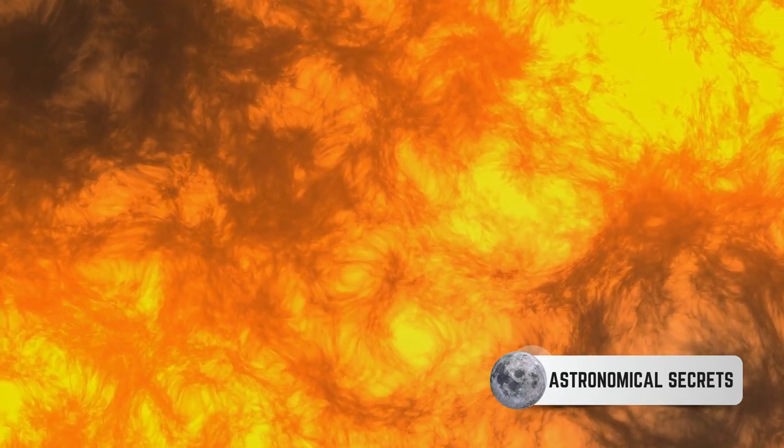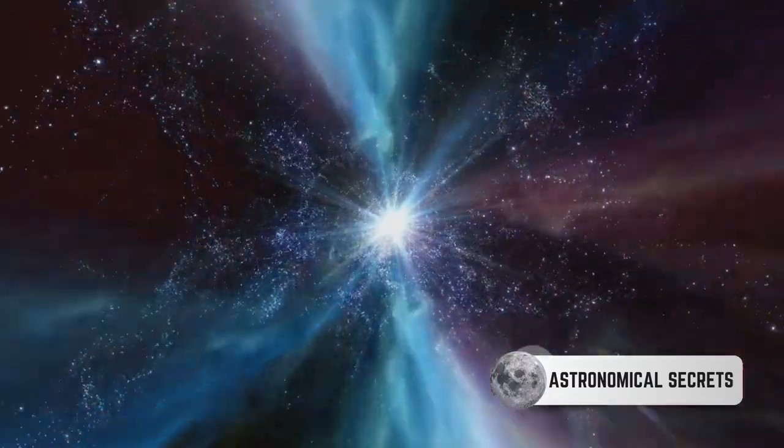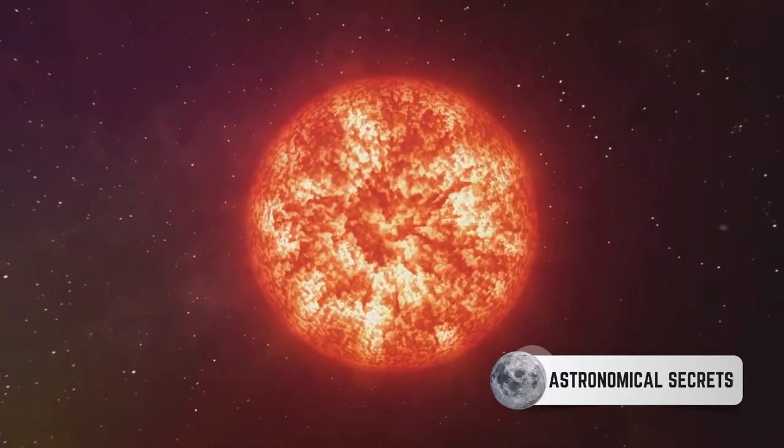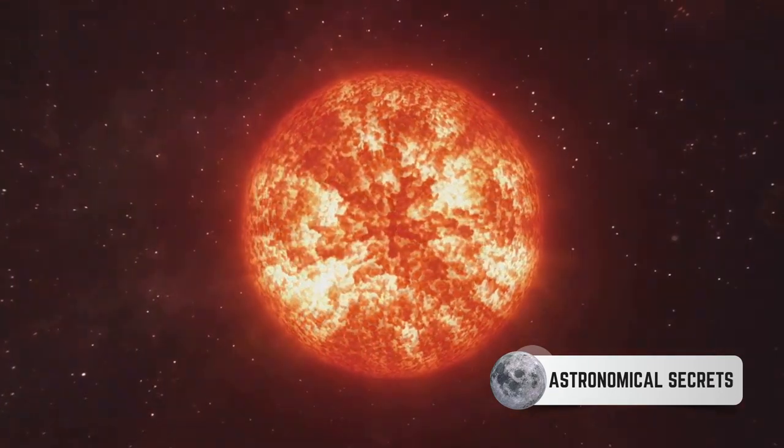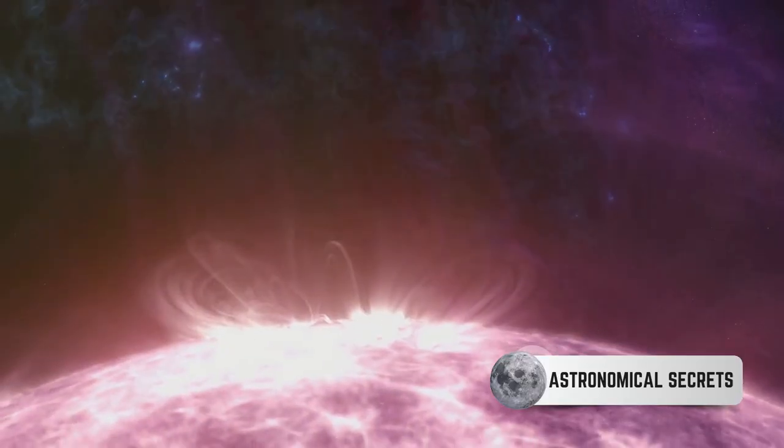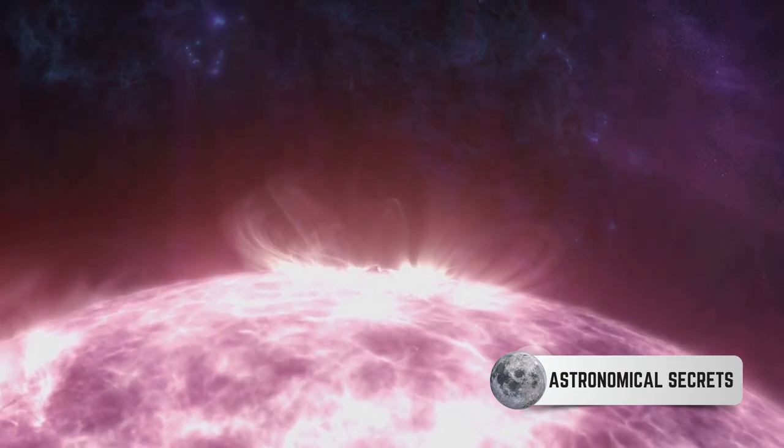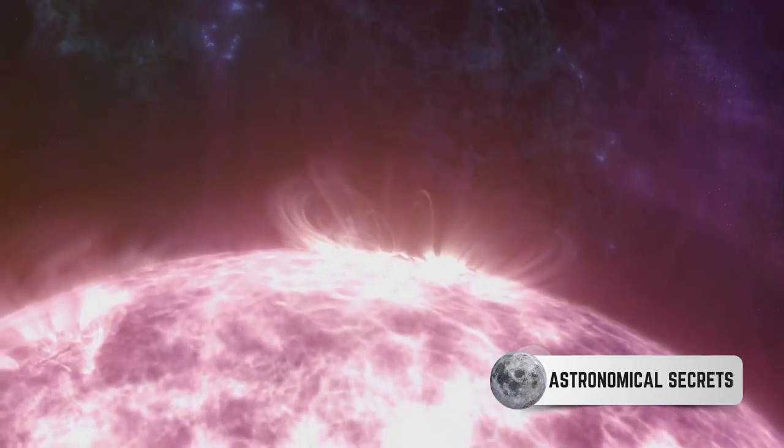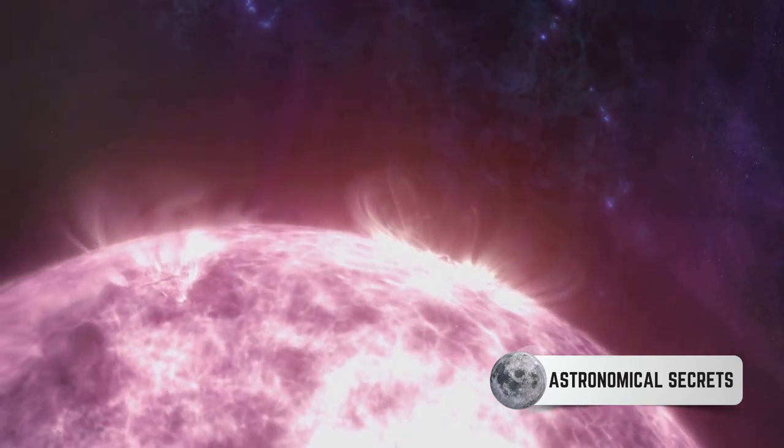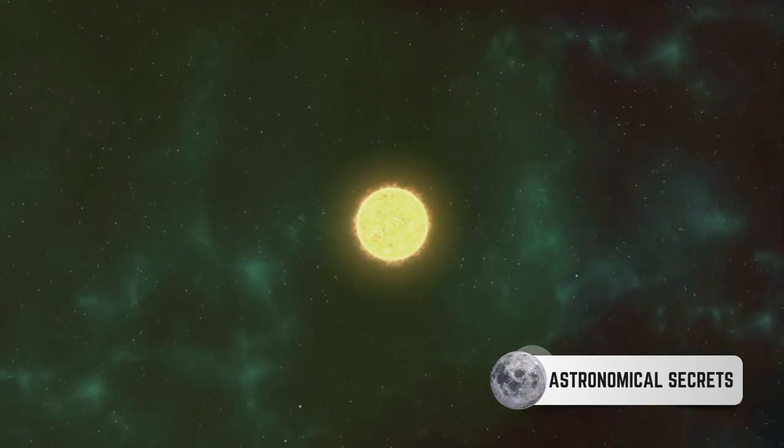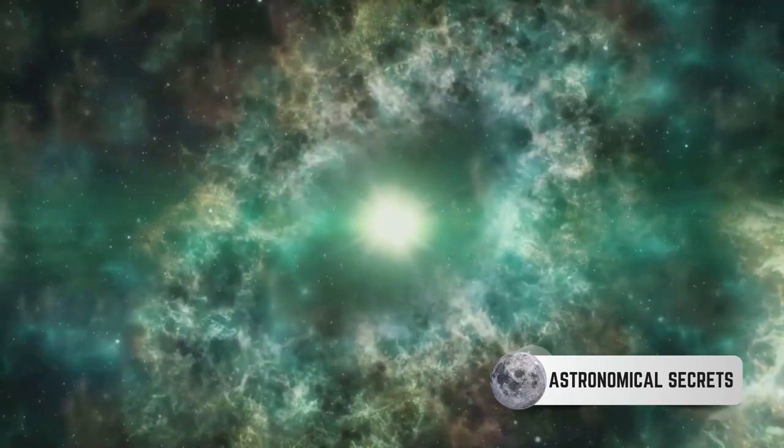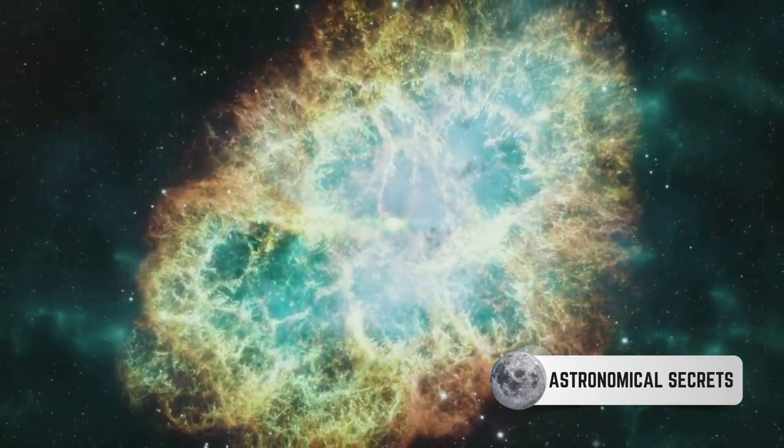But what happens when a star exhausts its nuclear fuel? Well, that's where things get really interesting. Depending on its mass, a star can meet one of many fates. Stars like our sun, after expanding into a red giant, will shed their outer layers and leave behind a dense core known as a white dwarf. Over billions of years, these white dwarfs will cool and darken, eventually becoming black dwarfs. If a star is slightly more massive, its death throes will result in a spectacular explosion known as a supernova. The remnants of this explosion can form a neutron star, an incredibly dense object with a mass up to twice that of the sun but only about 20 kilometers in diameter.